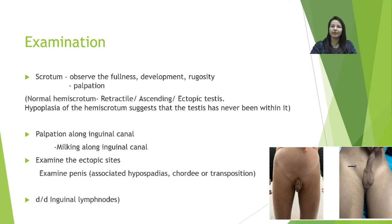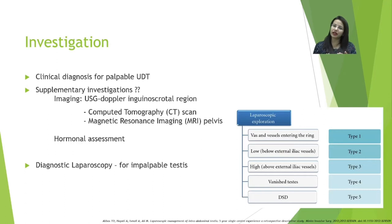A common differential diagnosis for undescended testis is an enlarged inguinal lymph node due to infection. With careful observation, one can distinguish between the two: a testis can be milked down from its position, while inguinal lymph nodes are fixed. Ultimately, cryptorchidism is predominantly a clinical diagnosis.